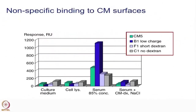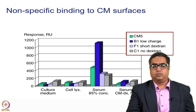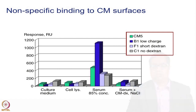The CM surfaces have very low non-specific binding when used with culture mediums, cell lysates, or serum in diluted or undiluted forms. These sensor chips are also used for immobilization of cells, bacteria, and viruses, and for the passage of very complex analytes like blood.